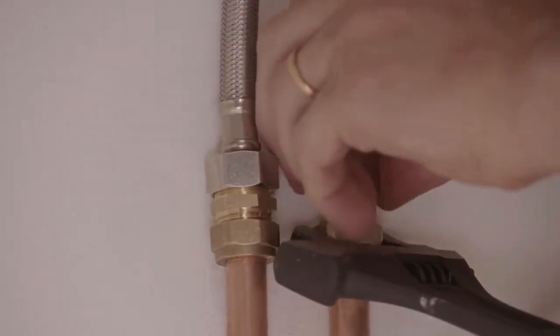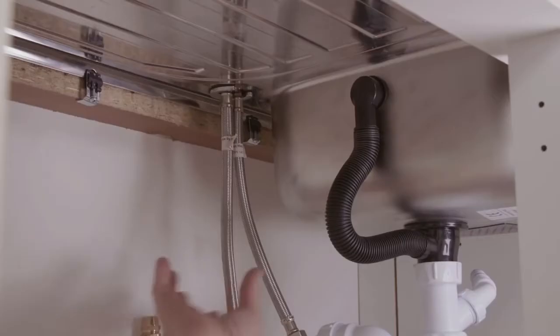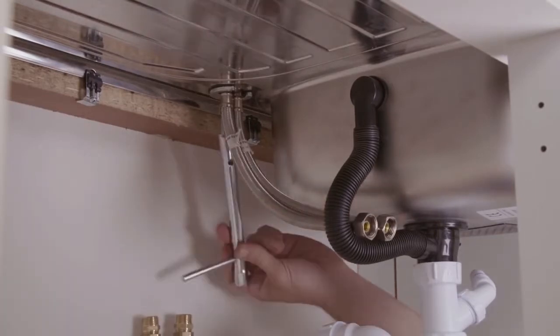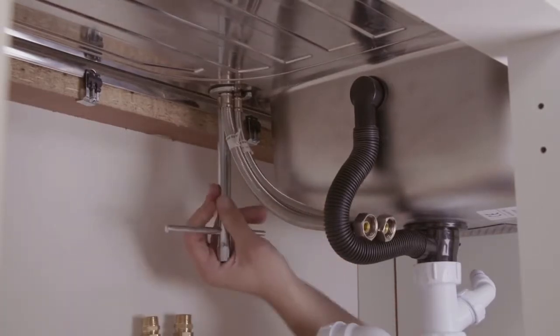Ideally, have a towel under the sink to catch any drips from tap tails when disconnecting. Once the hot and cold pipes are disconnected, you should undo the nut that holds the tap to the basin.